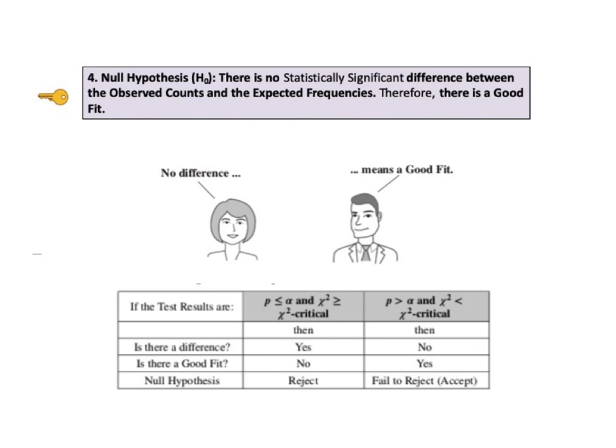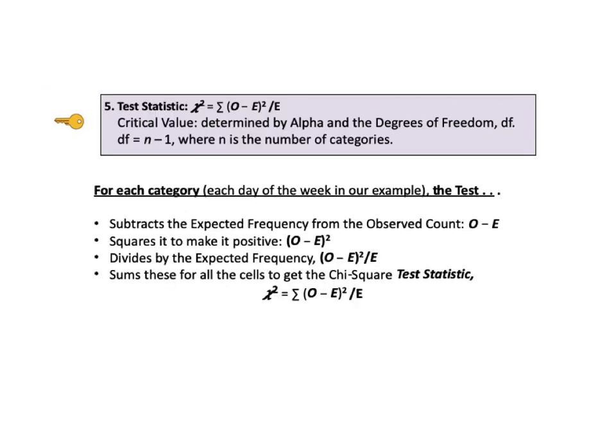For this test, the test statistic chi-squared equals the sum of the squares of the observed value minus the expected value, divided by the expected value. For each category — each day of the week in our example — the test subtracts the expected frequency from the observed count (o minus e), squares it to make it positive (o minus e squared), divides by the expected value (o minus e squared divided by e), and then sums these all up for the cells to get the chi-squared test statistic.